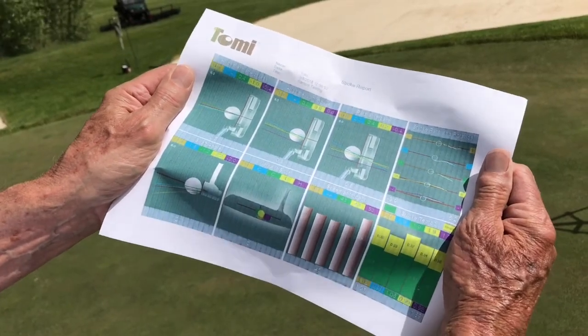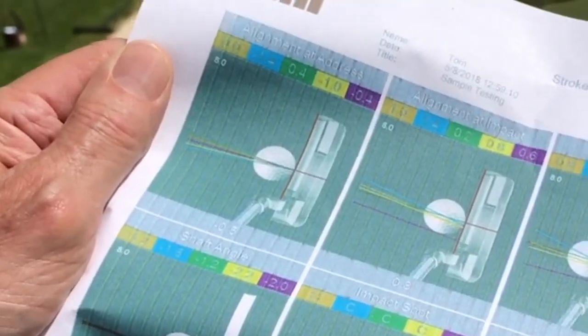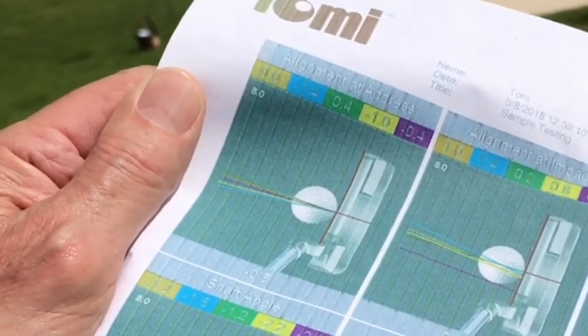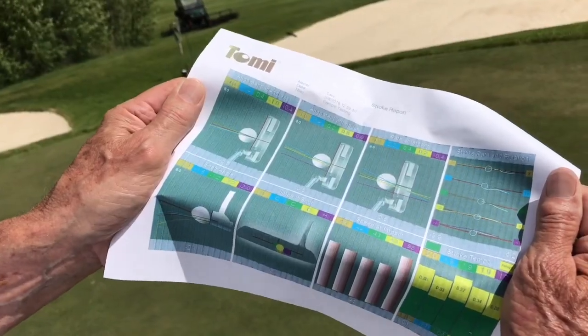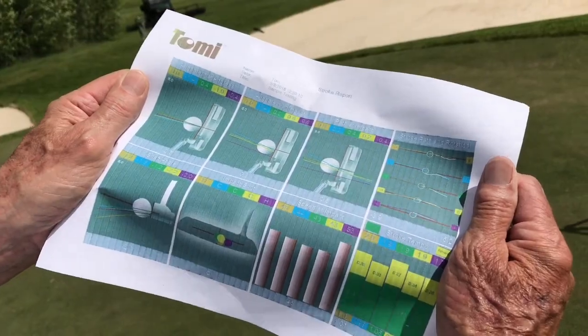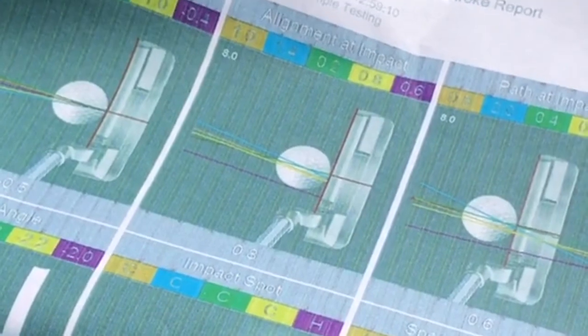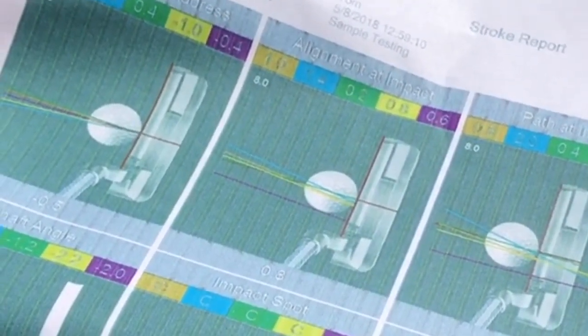Number one, alignment at address. The putter needs to be pointed to your target at address. Critically important. The next thing that's really important is your alignment at impact. Not only do we want the putter starting square to your target, but at impact it needs to be facing where you want the ball to go.